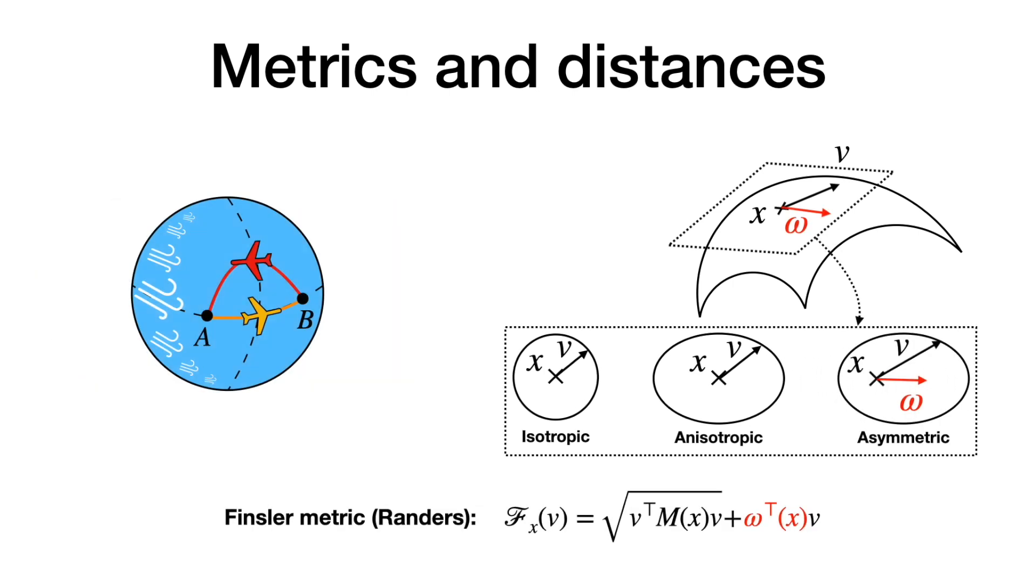We went a step further and studied Finsler metrics, where a tangent vector and its opposite no longer share the same length. Unit balls in the tangent space are now off-centered and asymmetric.